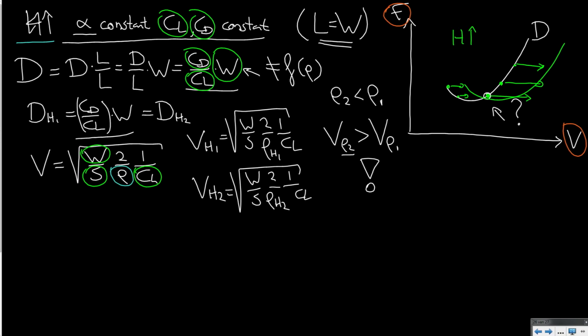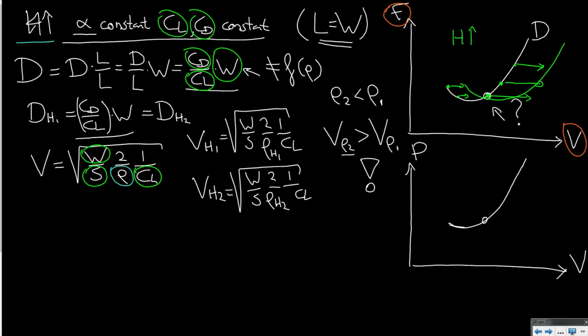That is the effect of altitude on the drag side of the performance diagram. But as you know, we also draw the performance diagram in terms of power versus speed. This diagram looks fairly similar to the drag curve — it is just rotated slightly — because to go from drag to power you multiply by airspeed. So we can do the same analysis and figure out what happens to a specific point on the power curve.